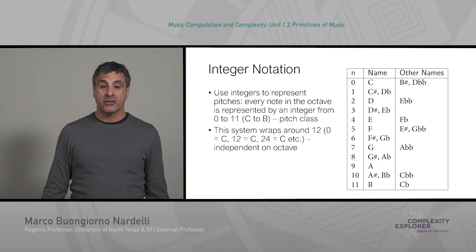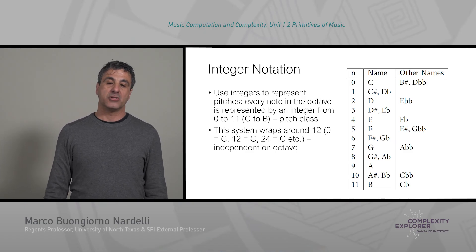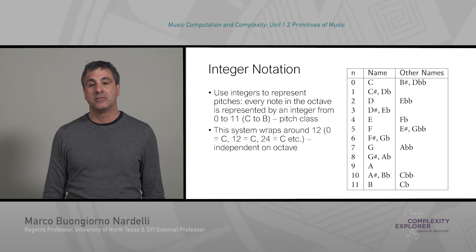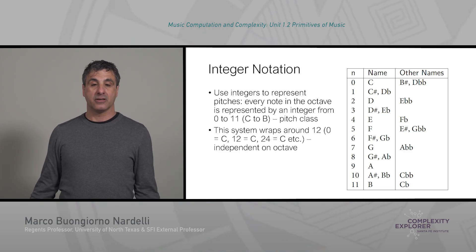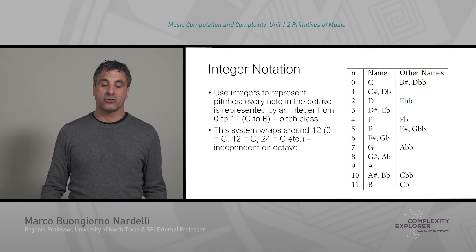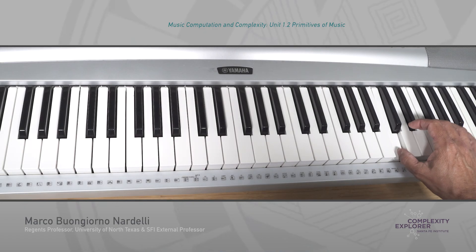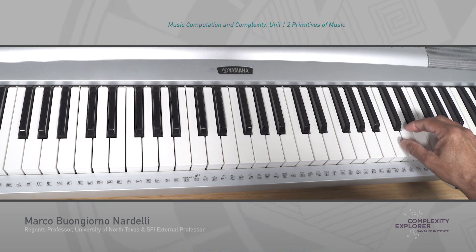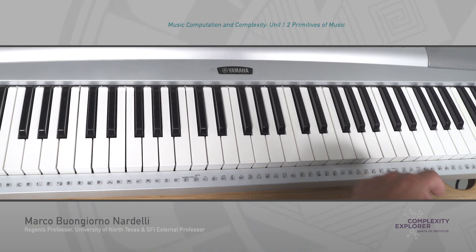We will use integer notation in many of the applications discussed in this course, making the manipulation of musical objects something we can do computationally. We will use Python to manipulate pitches and analyze compositions by translating pitch information into numerical information. One characteristic of our 12-tone equal temperament system is that if we focus on a single octave, the system wraps around 12 — it is a modulo 12 integer system. So playing on a high or low octave still corresponds to pitches between 0 and 11.